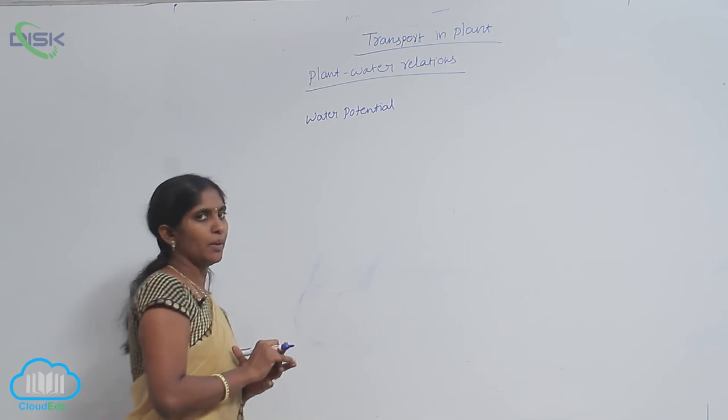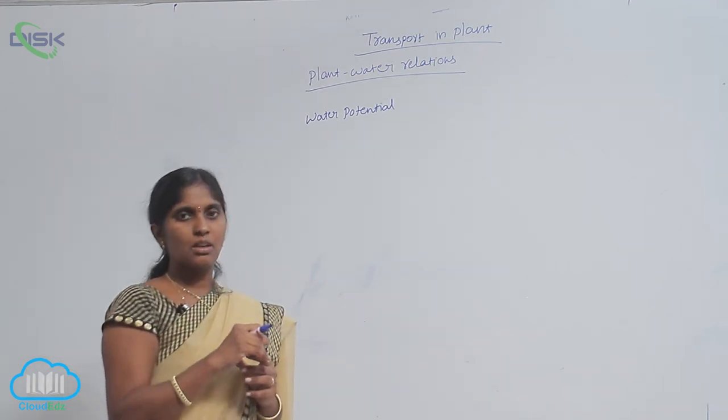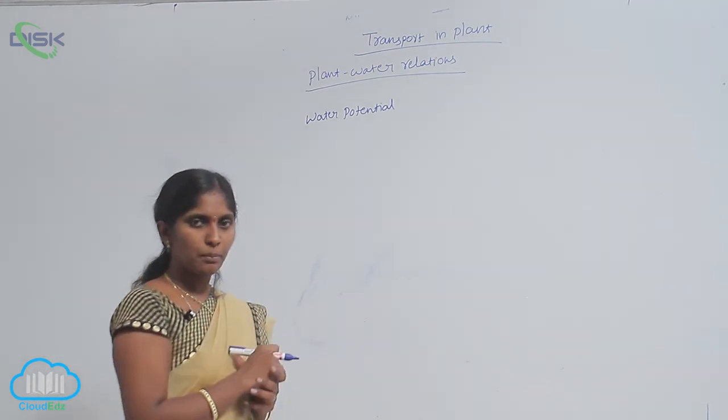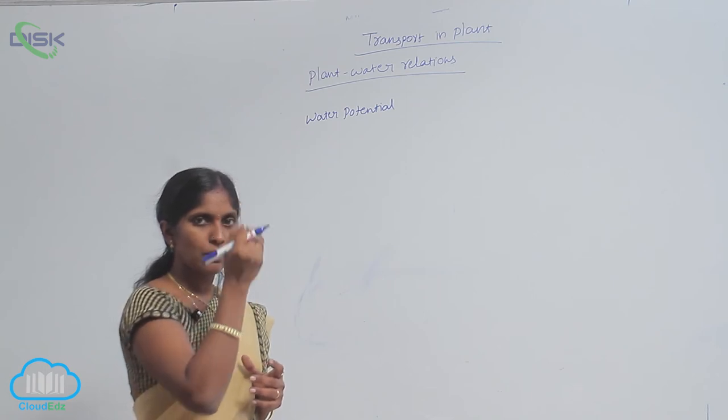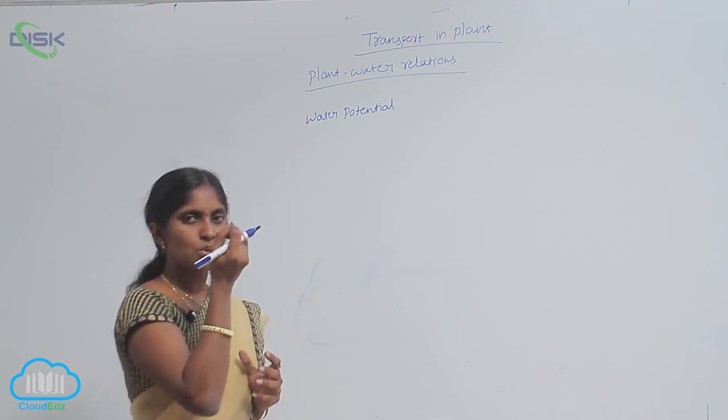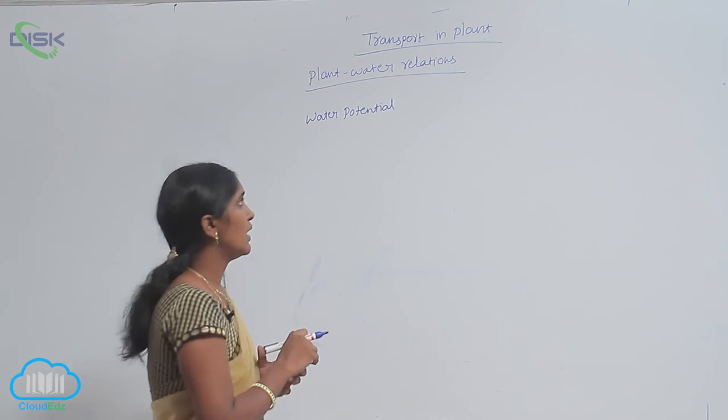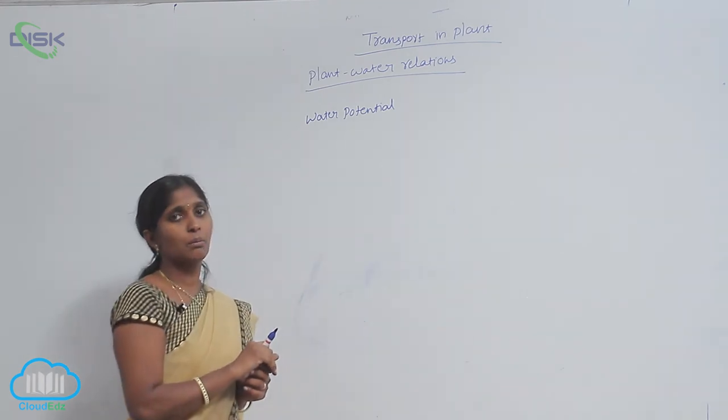Water moves from cell to cell, one part to another part, roots to tip of the stem, roots to leaves, roots to stem. So, water is moved throughout the plant.